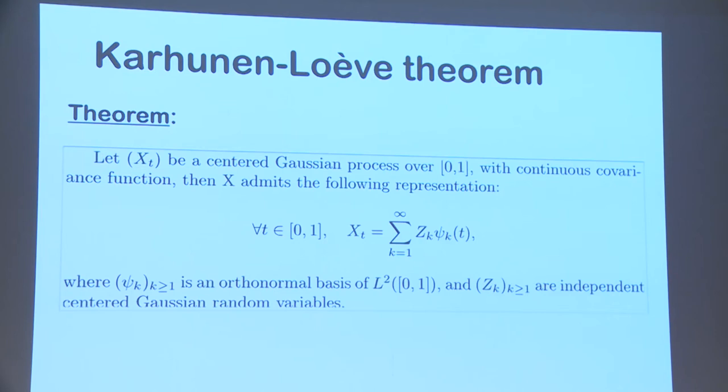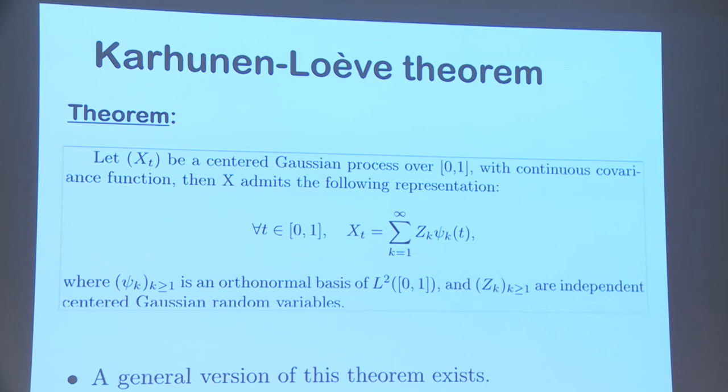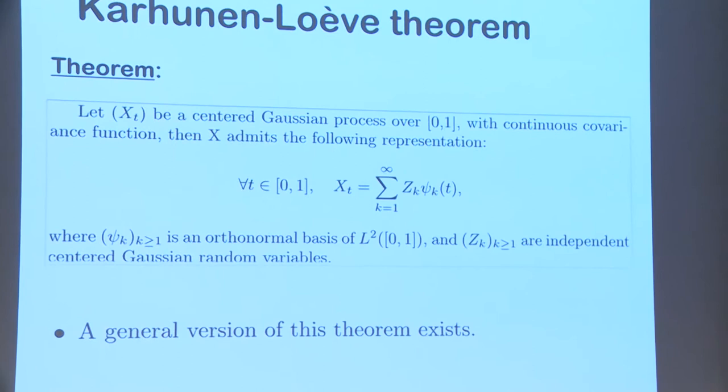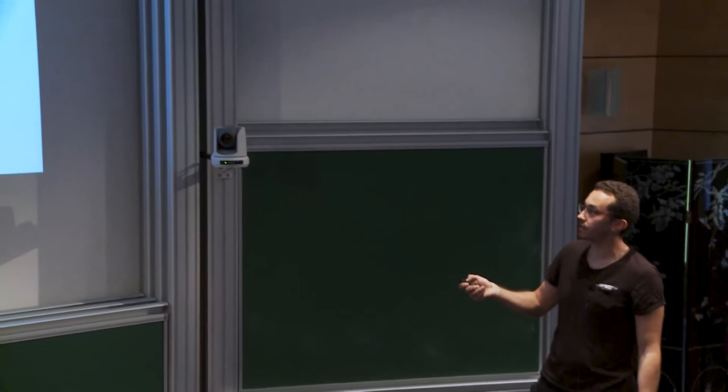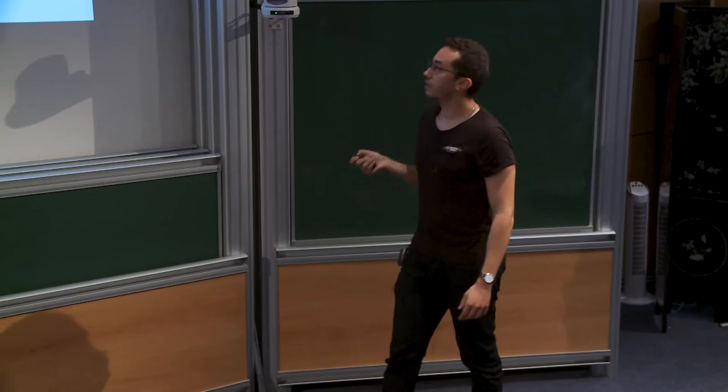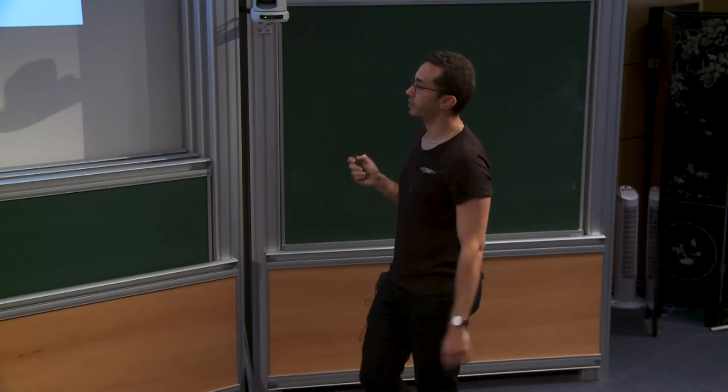The general version: if the process is not Gaussian but the covariance function is continuous, the decomposition still holds — but the Z_k's are only decorrelated, not necessarily independent. We don't know their exact distribution.